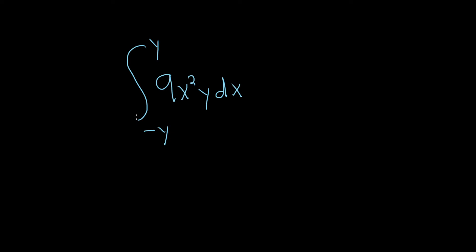Hi everyone. In this problem we're going to integrate 9x squared times y with respect to x from negative y to y. So we have a single integral yet we have two variables. Let's go ahead and work through it.